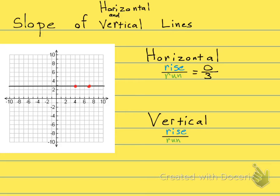But it doesn't matter what the run is. You could be going from that point to this point. You could have a run of one, two, three, four, five, six. You could have a run of six, but your rise is still zero.